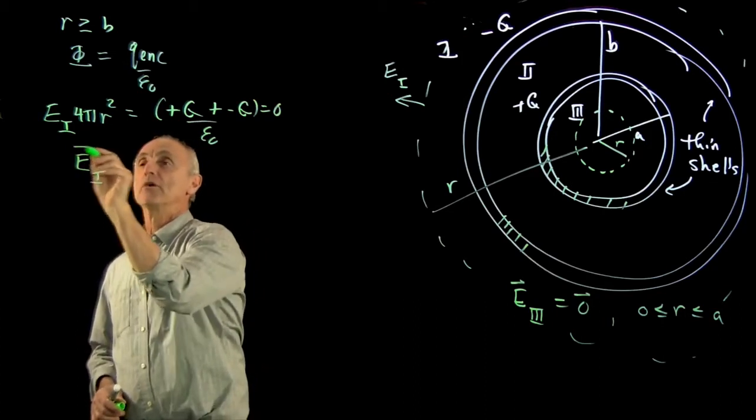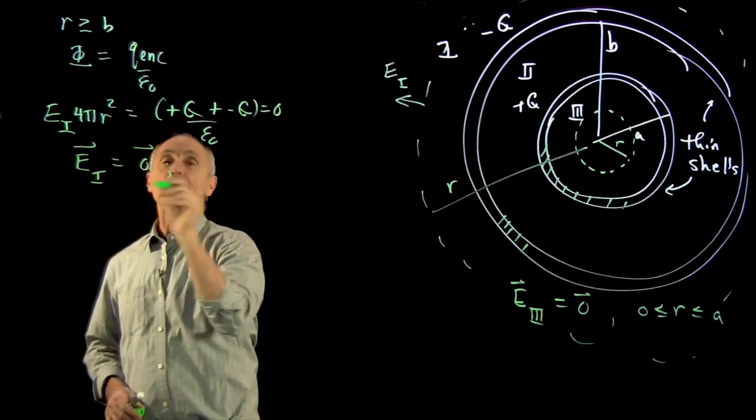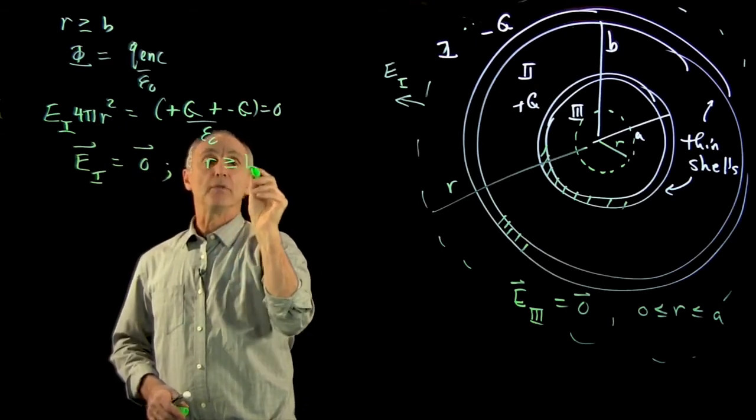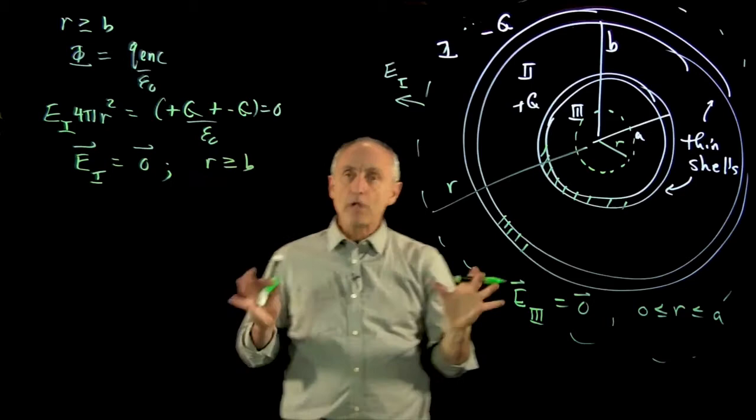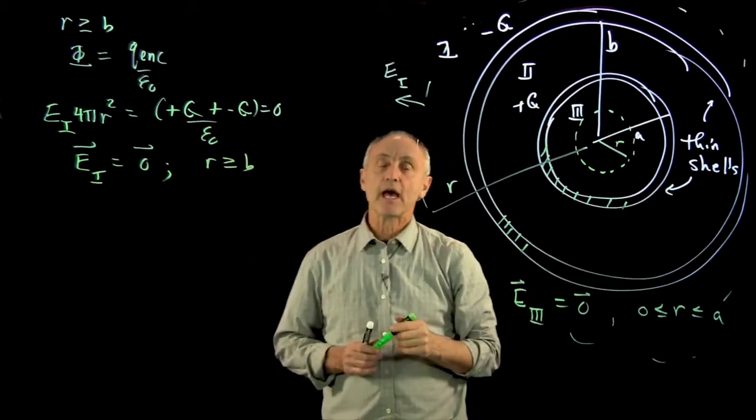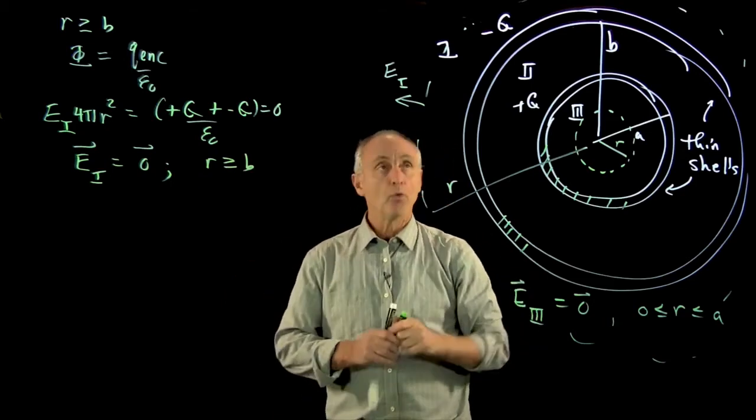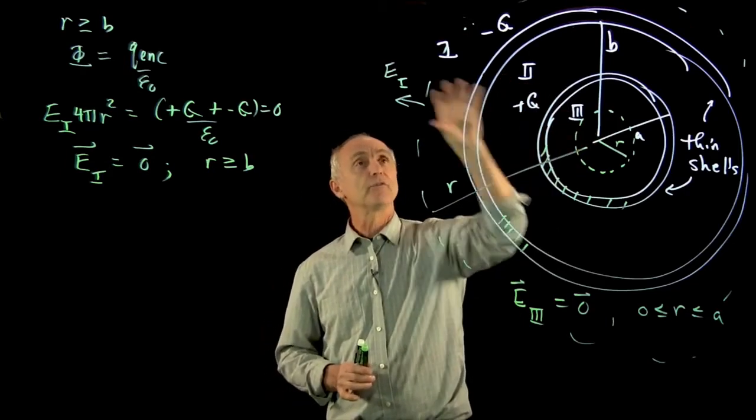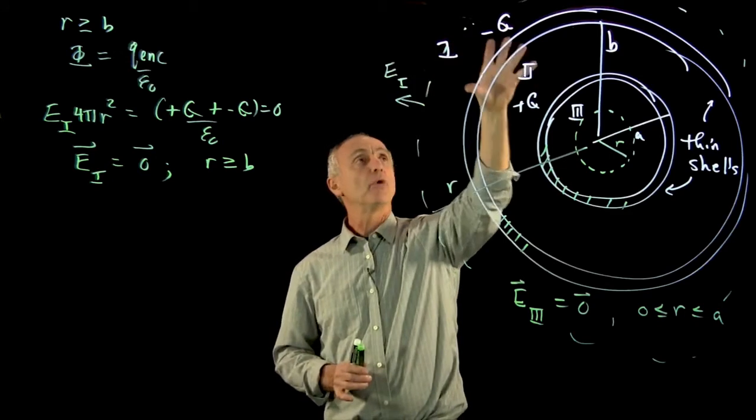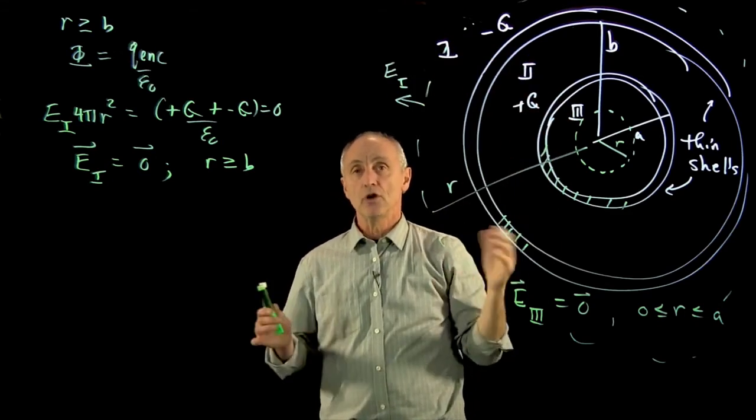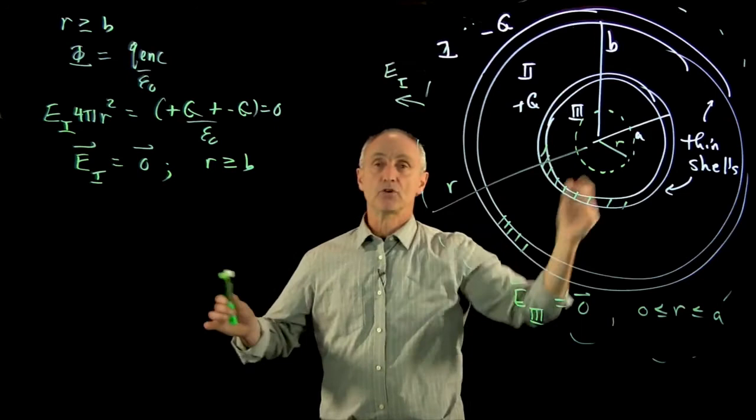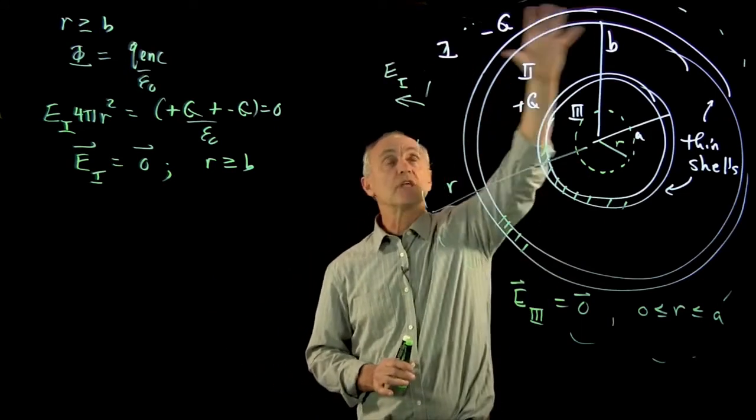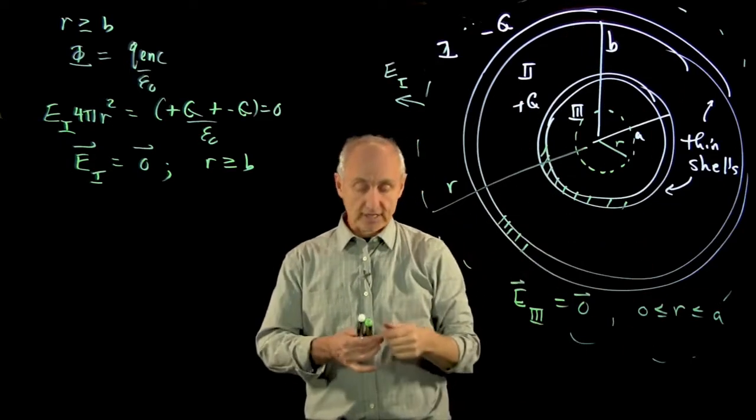And so once again, we conclude that the electric field outside the shells is 0. And this is r bigger than b. And now, if you wanted, you could think about this as a superposition problem where you just calculated the field of a negative shell and added it to the field of a positive shell outwards. Both shells act like point charges at the origin when you're outside them. And so the sum of those two fields will be 0 because one is negative, the other is positive. We just did it in one fell swoop with Gauss's law.